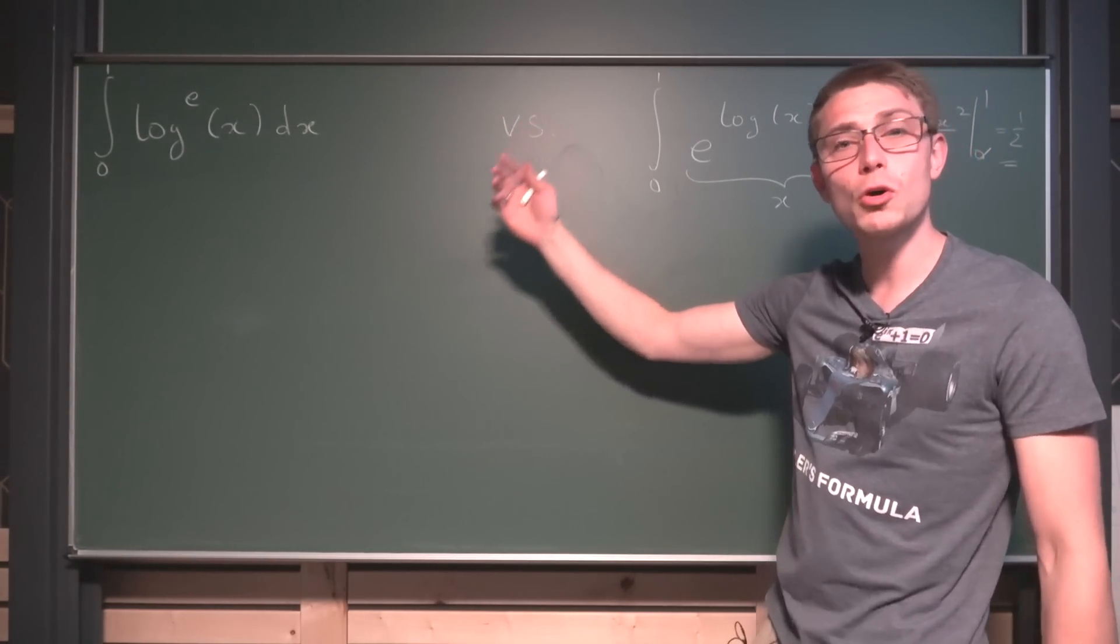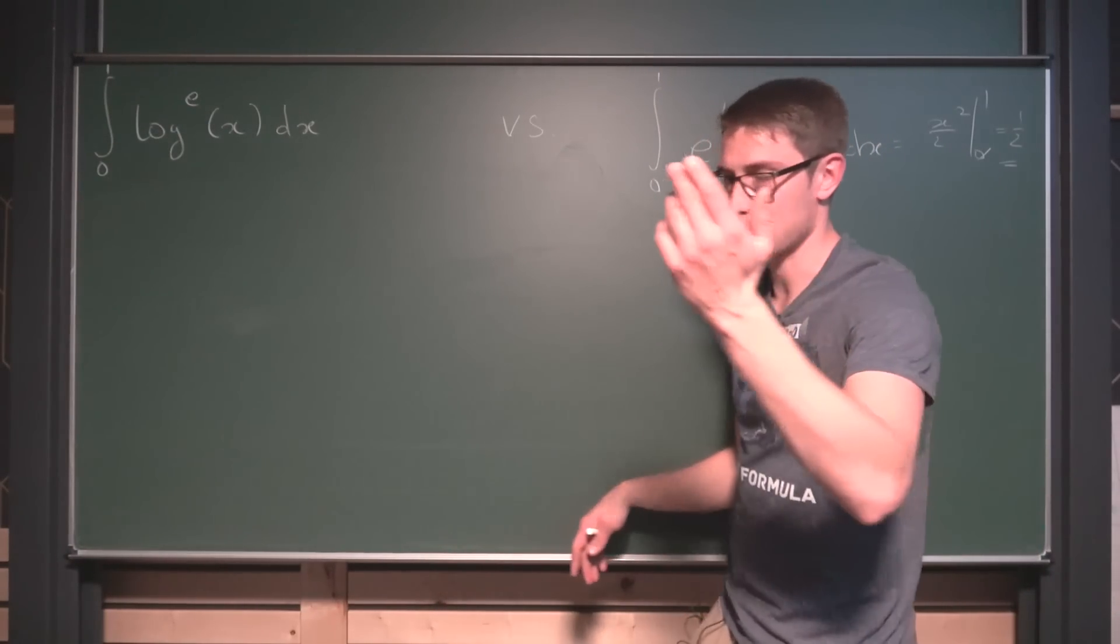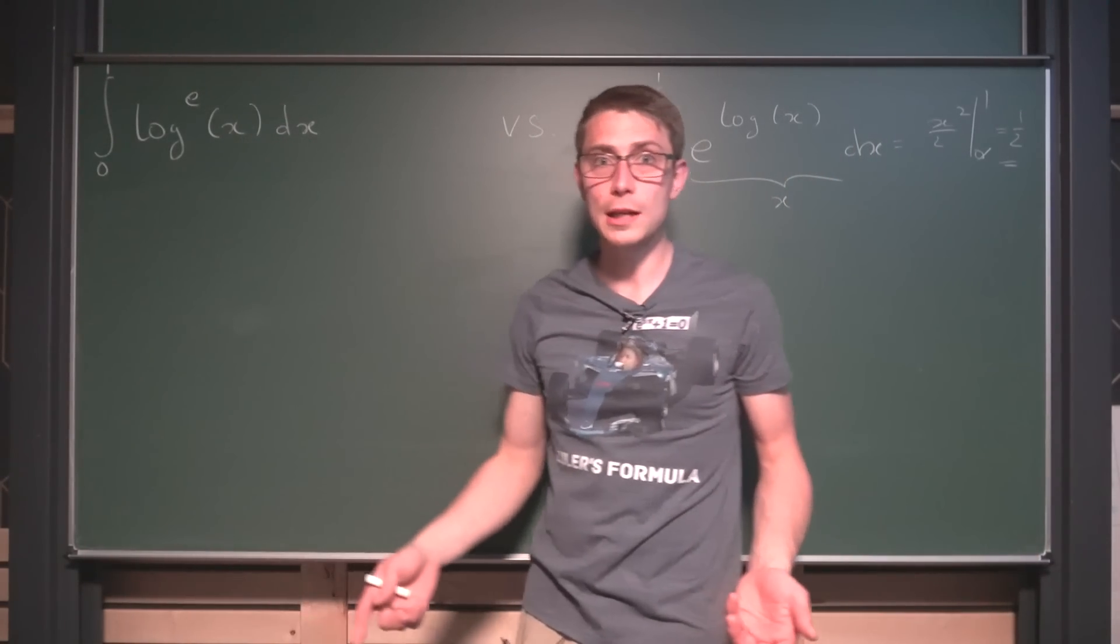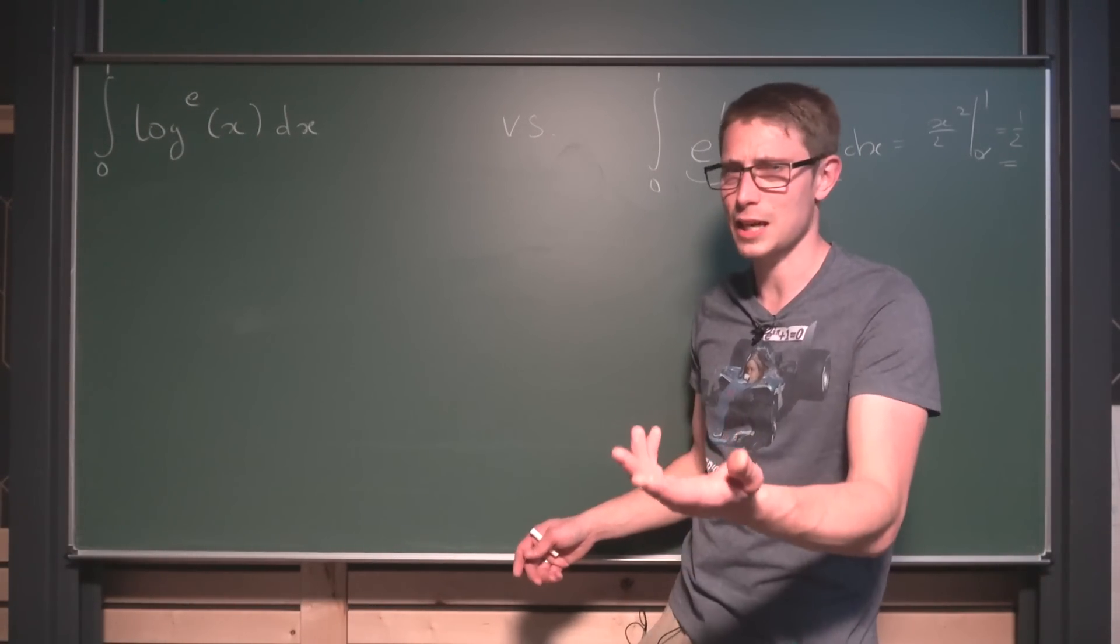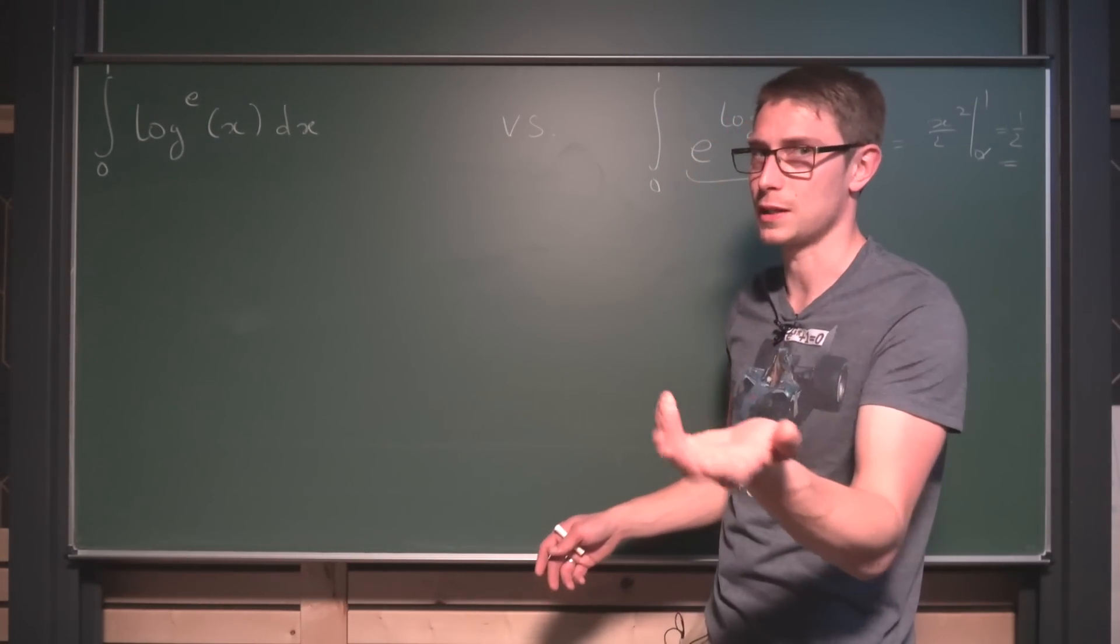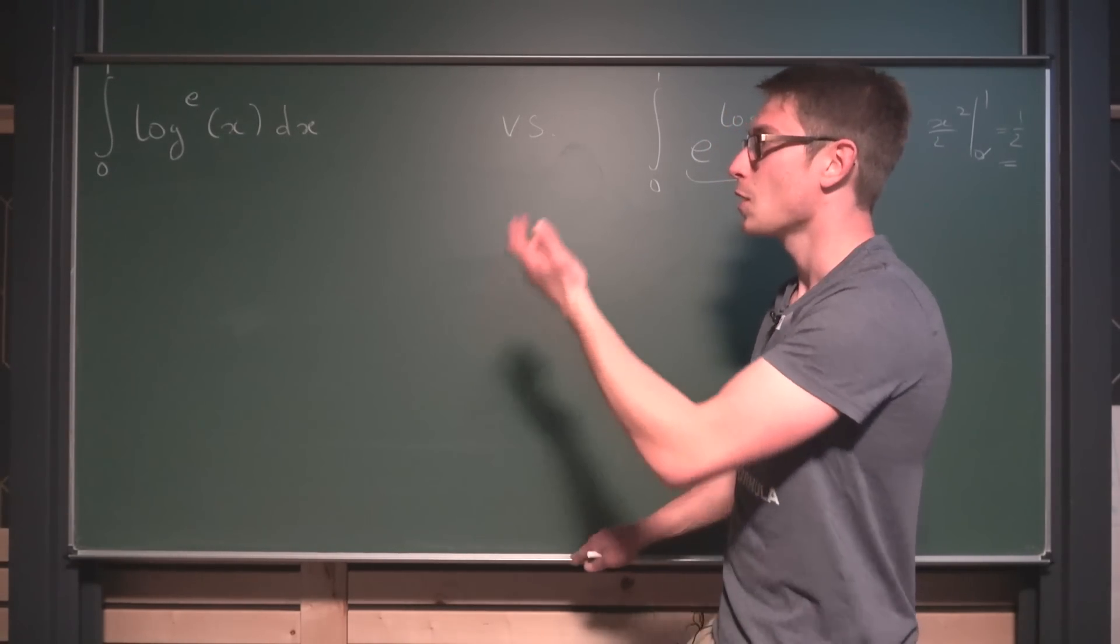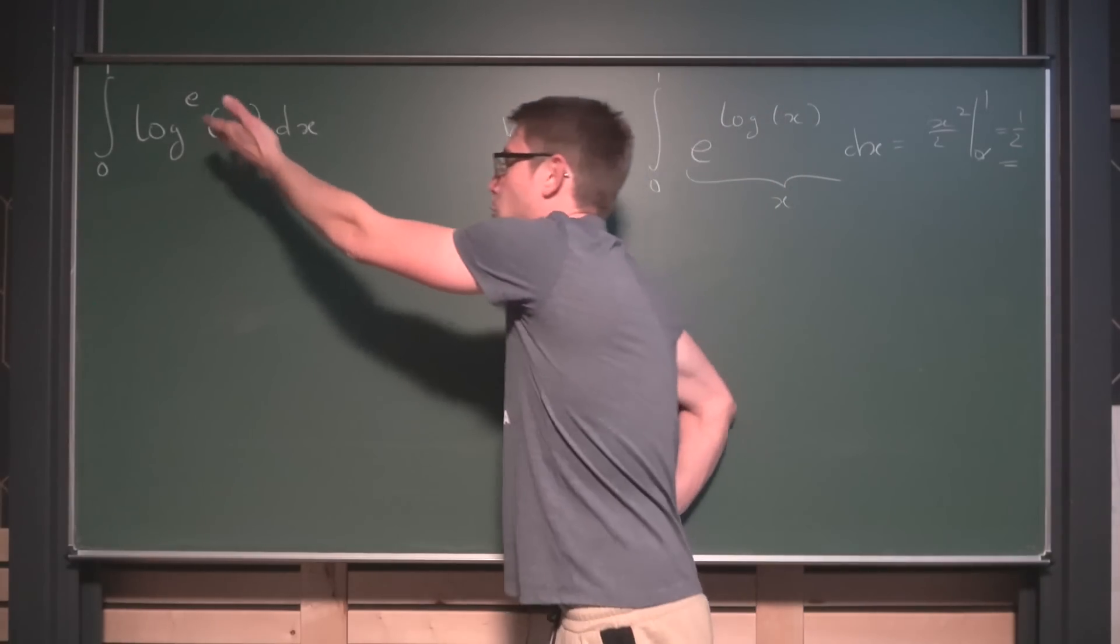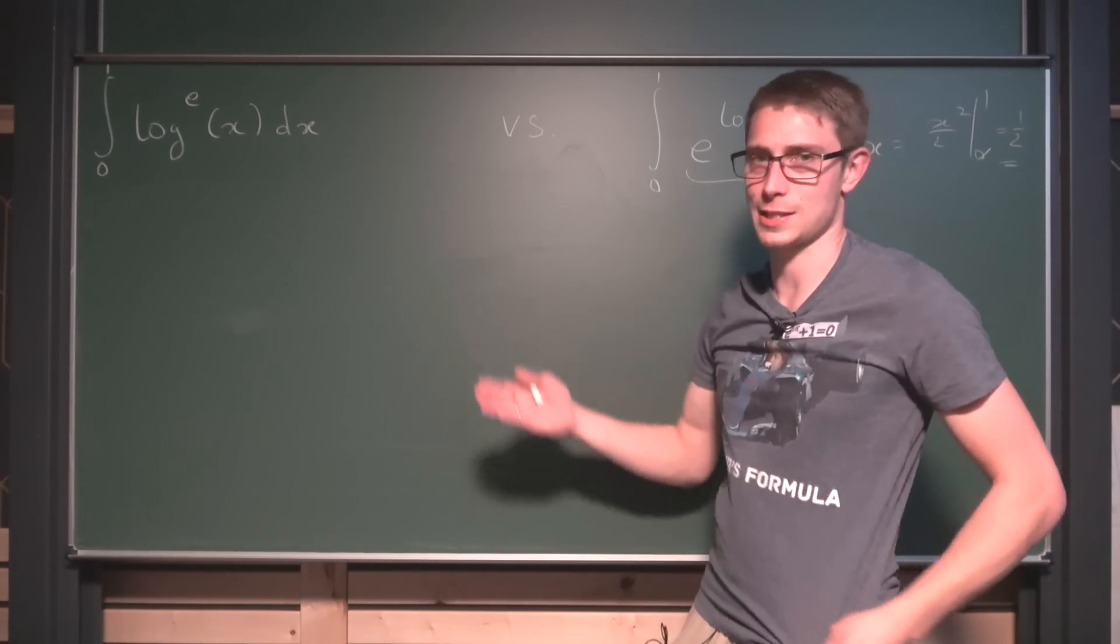We don't have the logarithm evaluated at e to the x, which would be the same as the inverse function of the function, giving you the identity. This is the logarithm raised to the e power. So this is the logarithm times the logarithm times the logarithm e times, which doesn't make any sense, to be honest. At least speaking in the natural sense of exponentiation. So how can you solve something like this? Well, the thing is we got a logarithm here. We don't want it right now. This is just in our way.